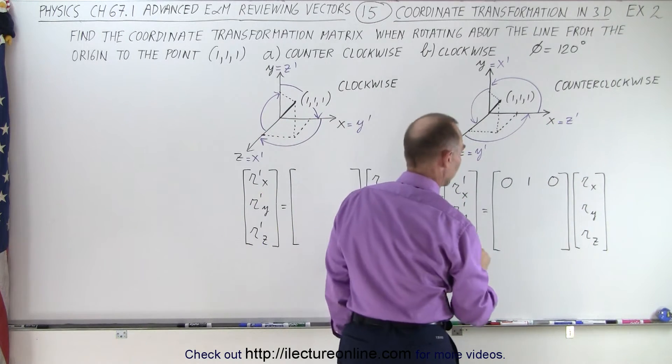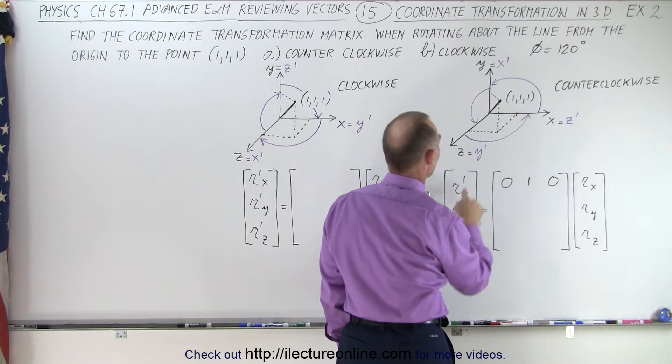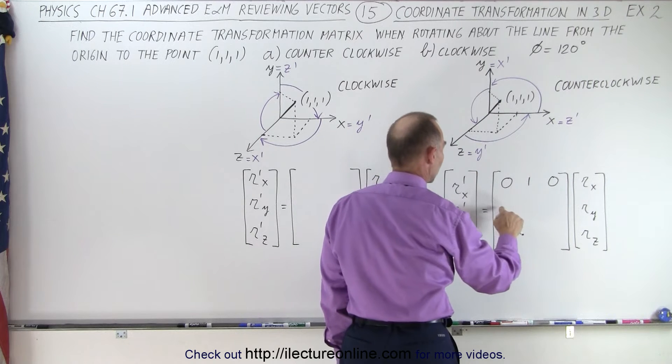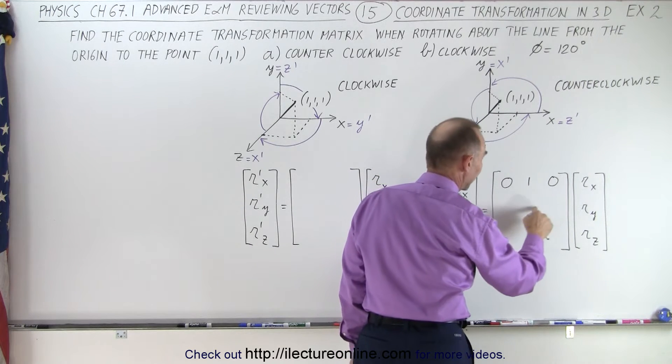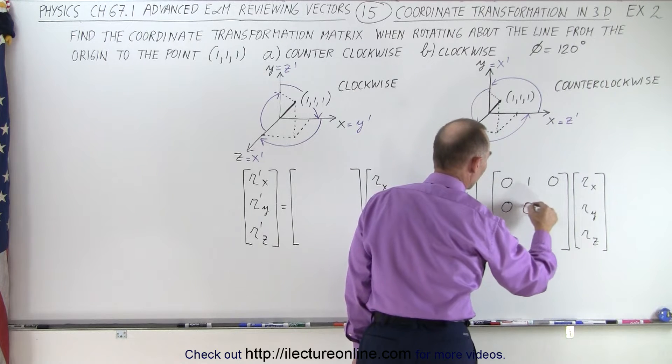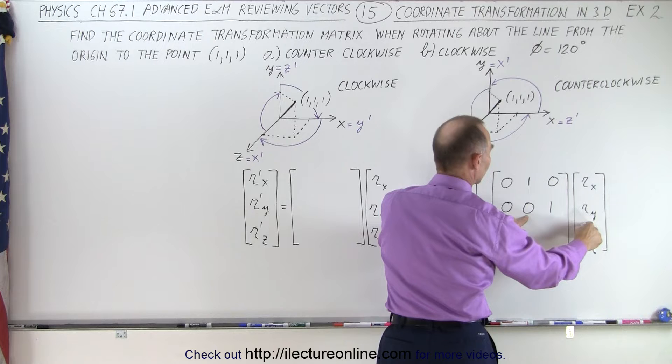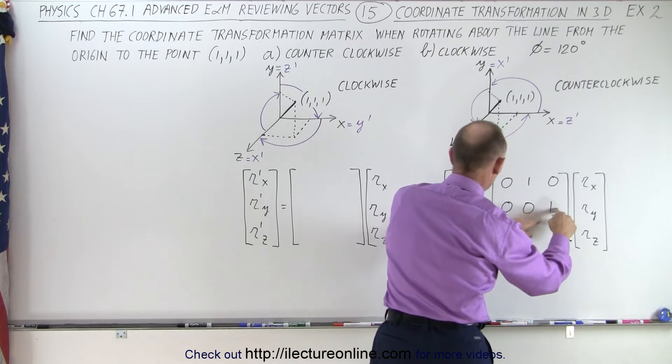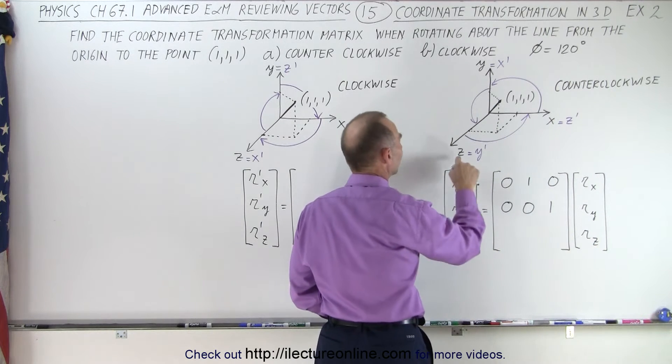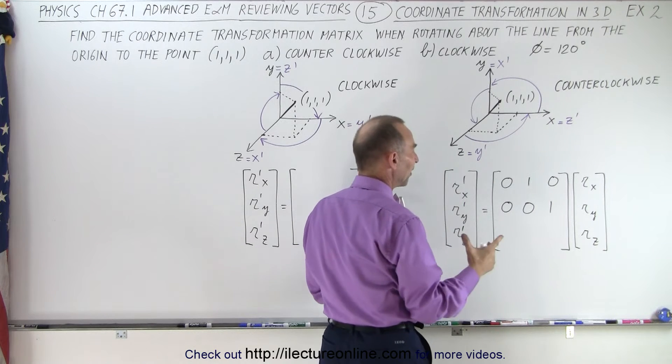Next, we want RY prime to be equal to Z. So here we're going to need a 0, a 0, and a 1. RX times 0 is 0. RY times 0 is 0. And RZ times 1 is RZ. So RZ will become equal to RY prime. Z equals Y prime.